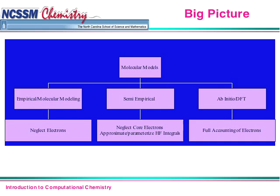Moving over to the right, the second type is called semi-empirical. Semi means some, and empirical means data, so the phrase semi-empirical means some data. What we do in semi-empirical methods is have some existing data already built into the computer model; the rest of the data is calculated when we run our calculation.